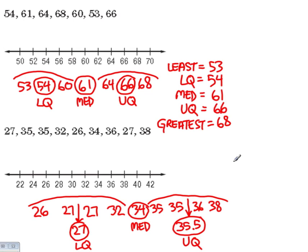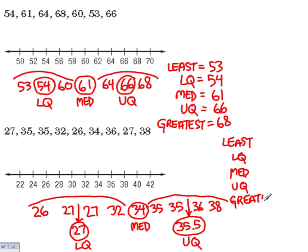So now I'm going to list my relevant numbers: 26, then the lower quartile is 27, the median is 34, the upper quartile is 35.5, and the greatest number is 38.